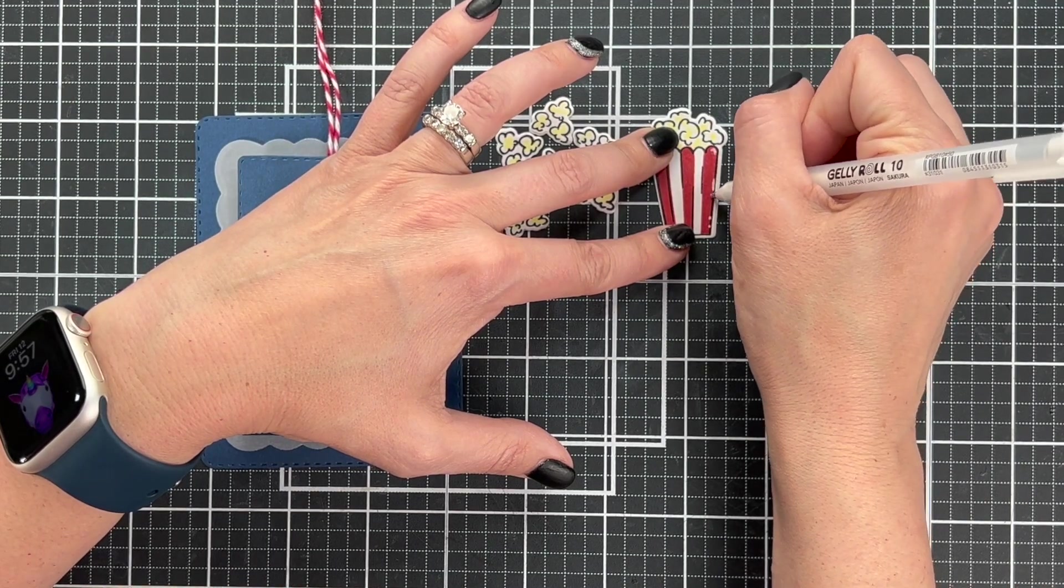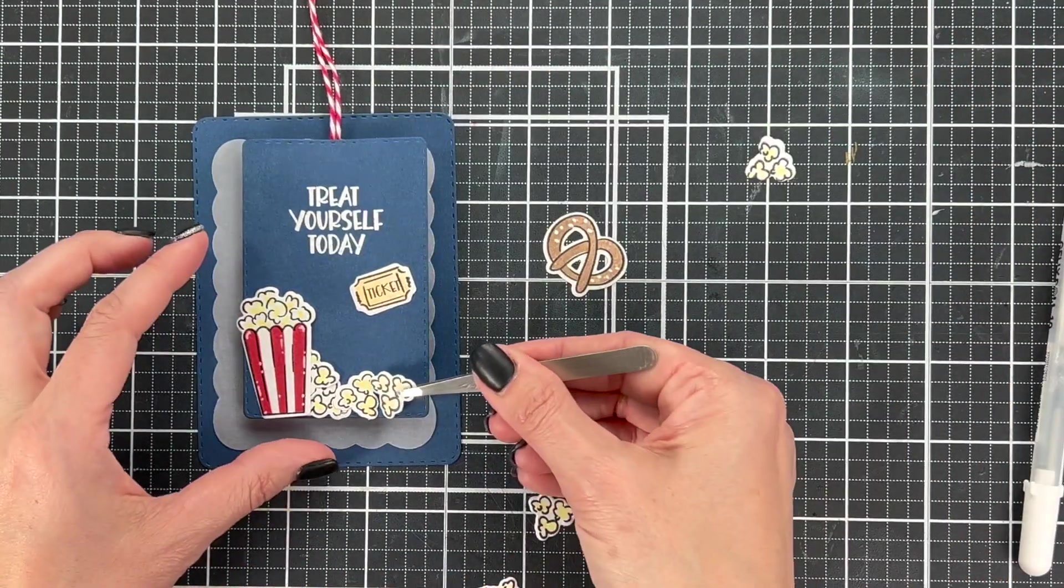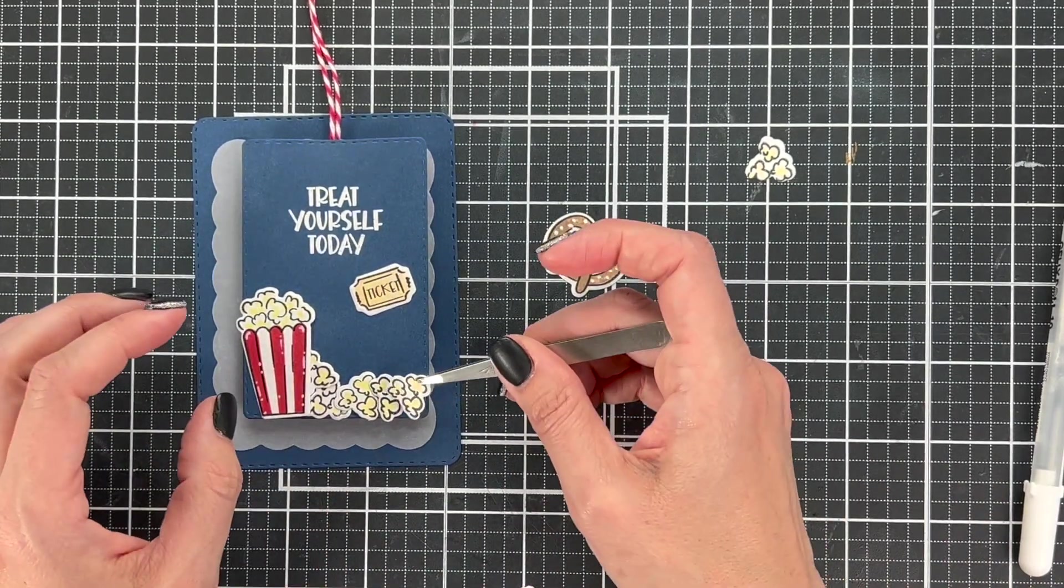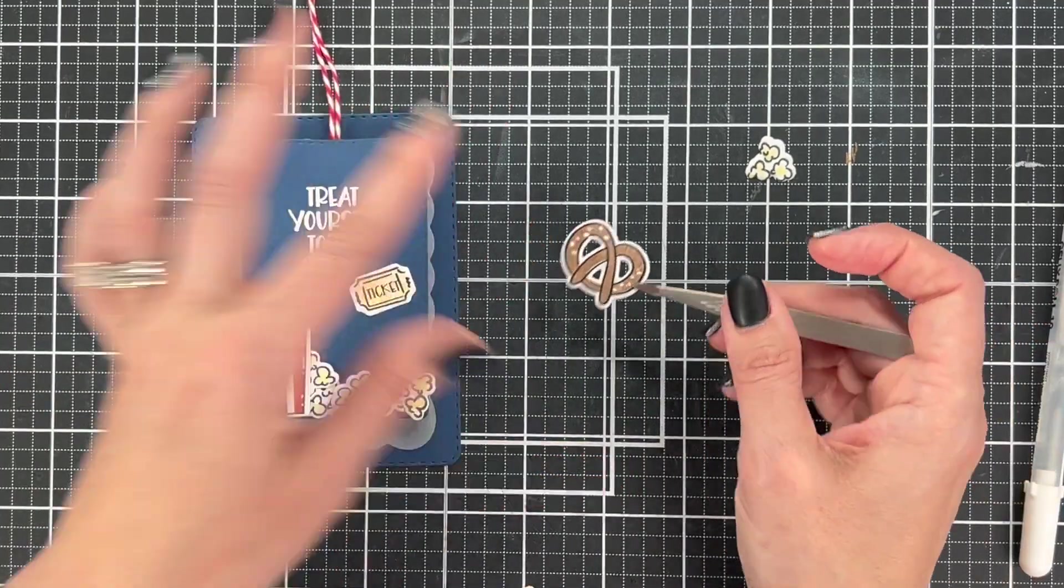So I added some white highlights to my images, arranged all these cute little popcorn pieces like they're falling out of the popcorn container, and then we'll glue this card together and it'll be done.